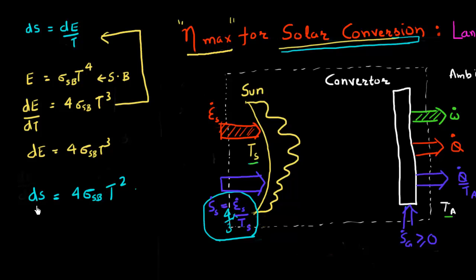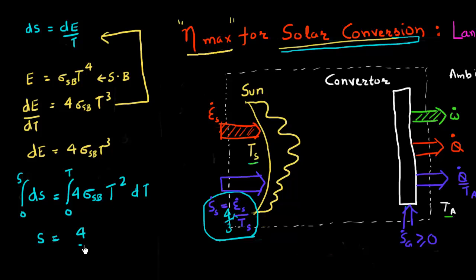Now I can further integrate this with respect to temperature, making use of the fact that entropy at zero temperature is equal to zero. So I integrate from zero Kelvin to a certain temperature T. Integrating T squared gives a third power in temperature with a coefficient of one-third. The entropy comes out to be (4/3)σT³.